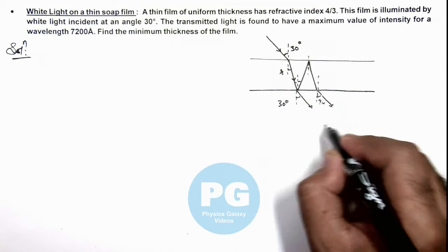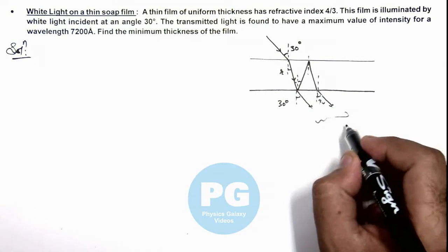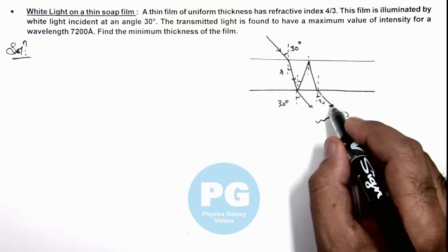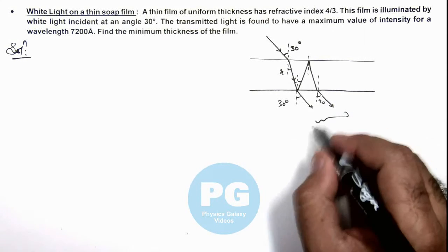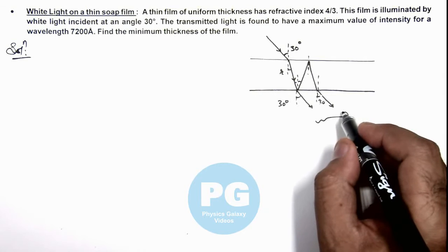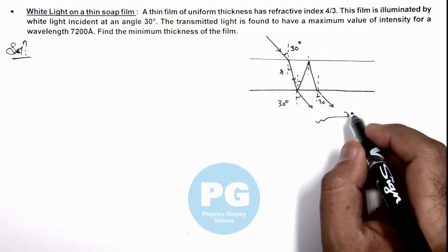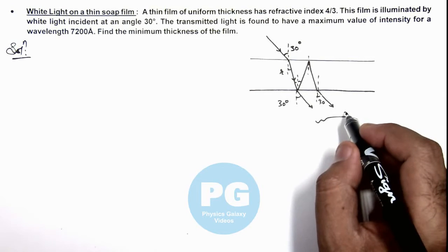So when these two light beams interfere, the light beams will have constructive interference if the path difference for the two beams in air is a multiple of lambda. Constructive interference will take place. Now in this situation first we need to analyze the path difference.